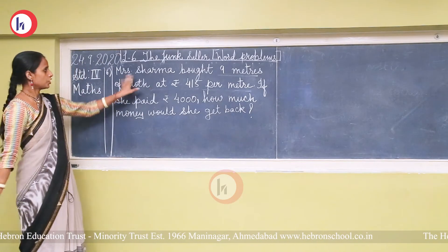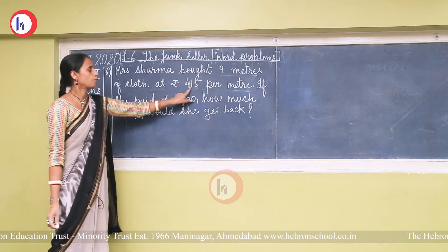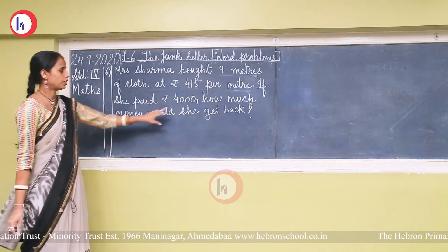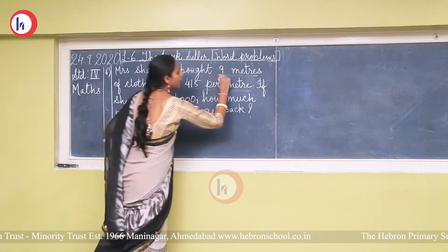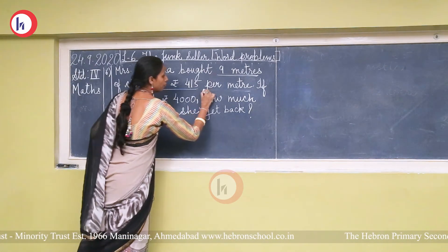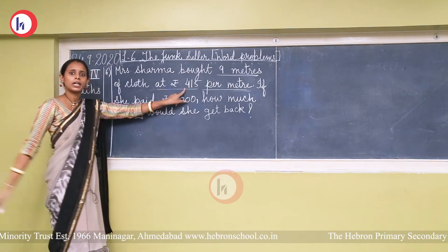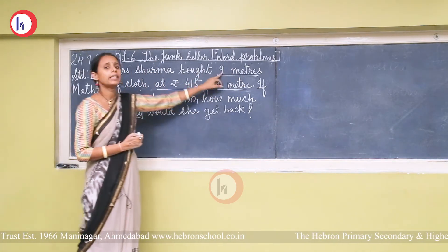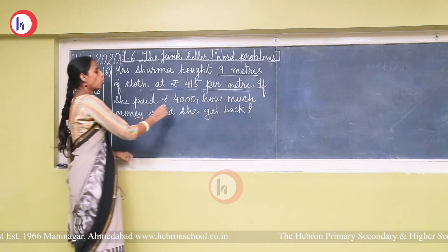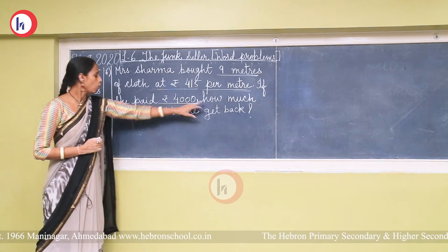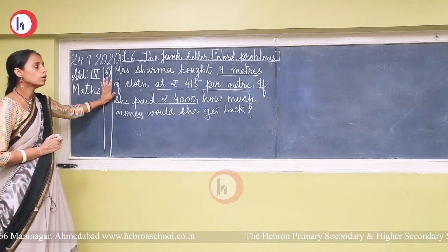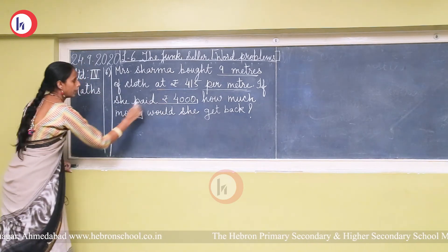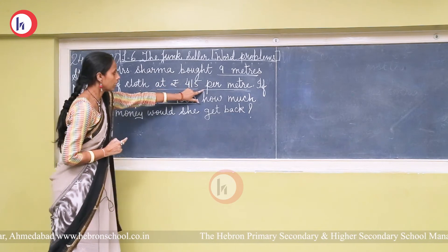Next question: Mrs. Sharma bought 9 meters of cloth at rupees 415 per meter. If she paid rupees 4000, how much money would she get back? Per meter price is rupees 415, and she bought 9 meters. First we find the cost of 9 meters, then calculate the change.